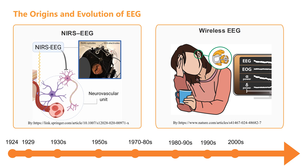Entering the 21st century, EEG technology achieved strong integration with other neuroimaging techniques, such as functional magnetic resonance imaging, near-infrared spectroscopy, and magnetoencephalography. This integration allows us to simultaneously obtain brain activity data with high temporal and spatial resolution, providing a more comprehensive tool for studying complex cognitive functions. At the same time, the emergence of wearable EEG devices has made brain electrical signal acquisition more convenient. Today, consumer-grade EEG devices have entered the lives of ordinary people, applied in areas such as sleep monitoring, attention training, and mental health management. Imagine a simple headset that can not only tell you about last night's sleep quality, but also remind you when to relax your brain.